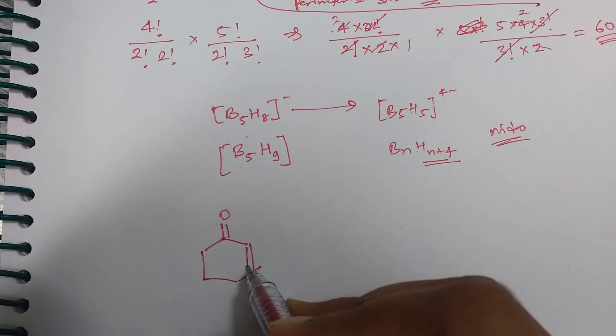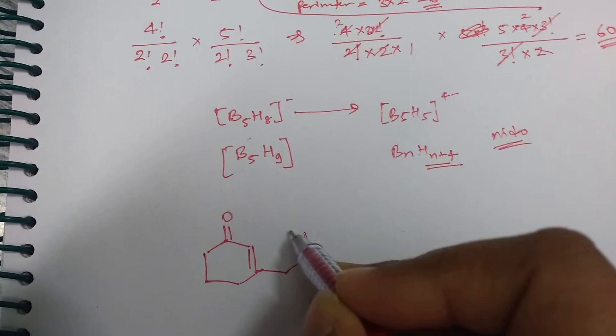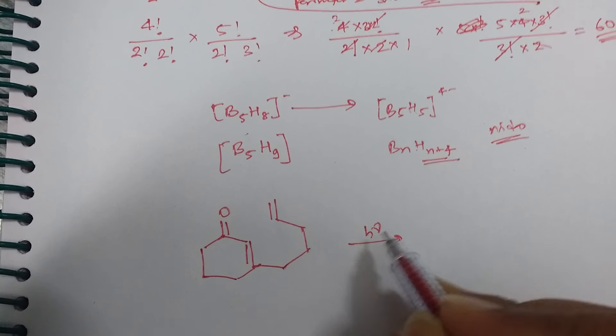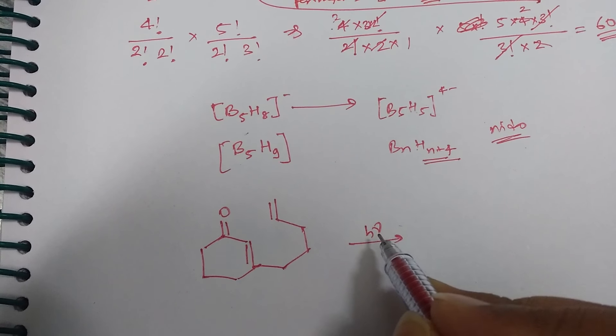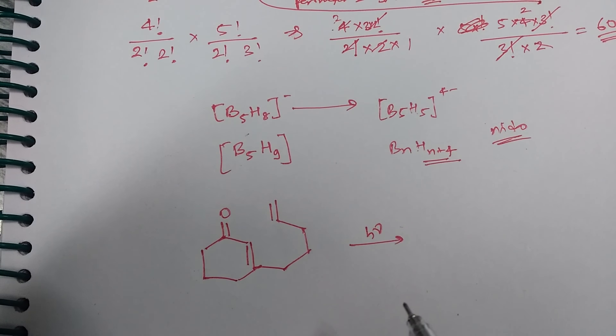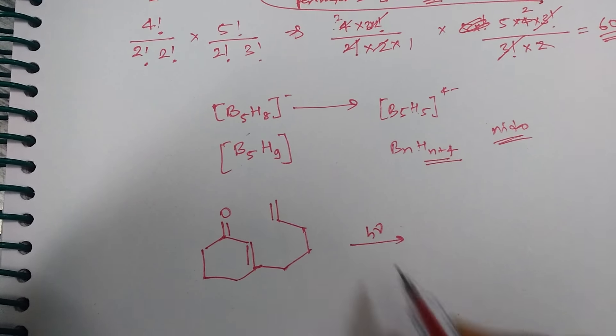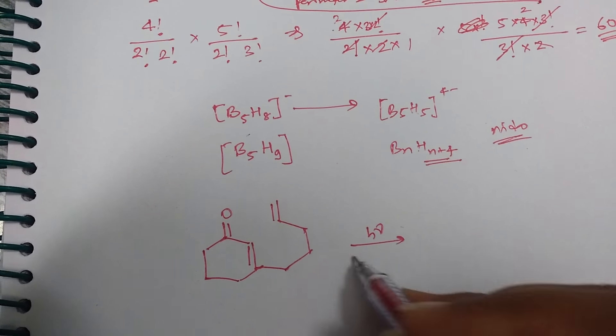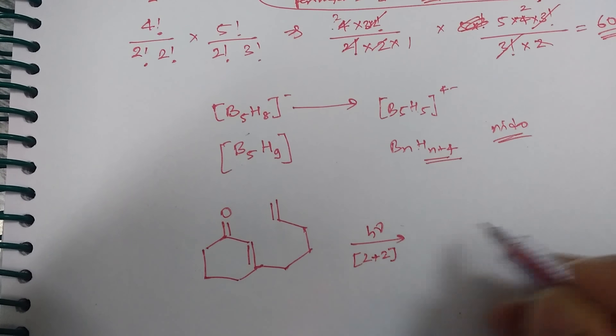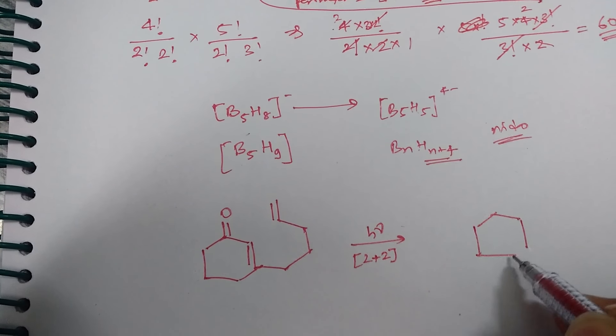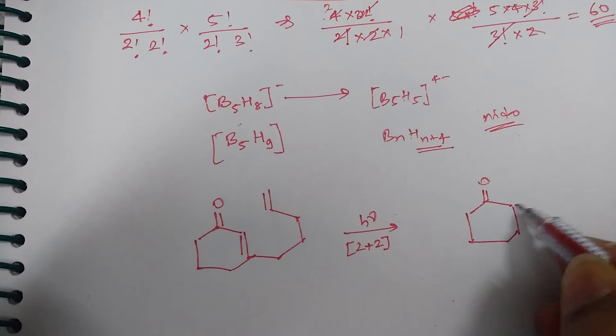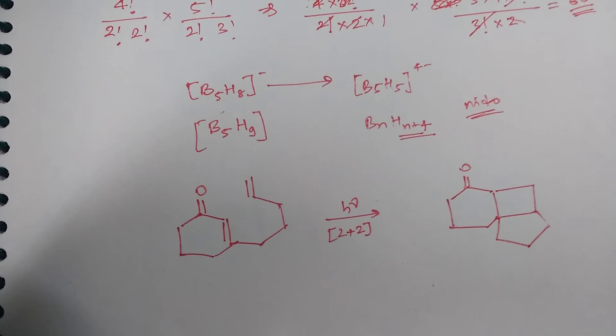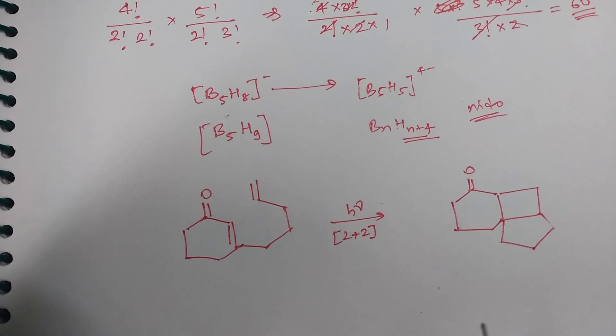And one more question came from 2+2 cycloaddition. That was like this question was like that, something like that. So for this question it was given in photochemical, photo like method, sorry, conditions. You have to give 2+2 cycloaddition and the product would be like somewhat like this. So this was the answer.